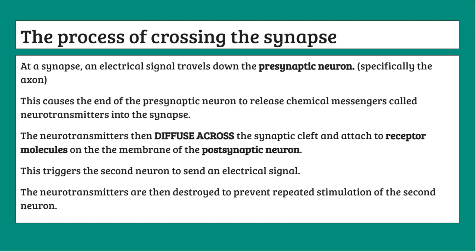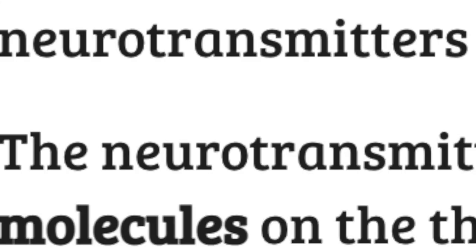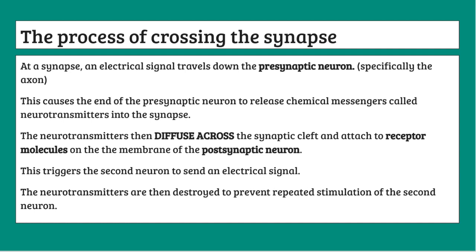This triggers an electrical impulse in the second neuron, the post-synaptic neuron, so now we're back to an electrical impulse. We started with an electrical impulse traveling down the pre-synaptic neuron, converted it into a chemical messenger using neurotransmitters to cross the synaptic cleft, and now we're back to an electrical impulse. Finally, the neurotransmitters are destroyed at the end of the sequence to prevent repeated stimulation of the second neuron, as their continued presence would keep triggering repeated electrical impulses.